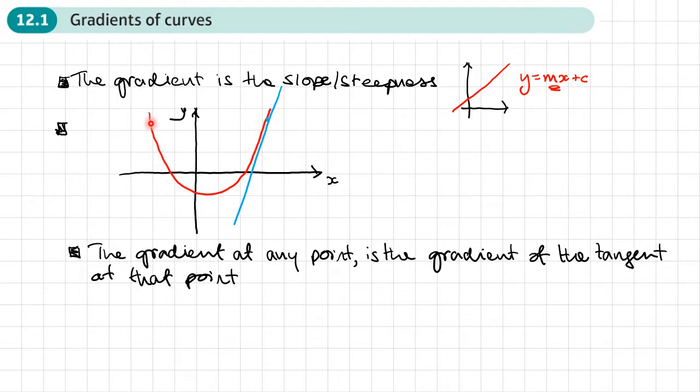By drawing a tangent to a graph, a curve at any point, and by finding the gradient of that tangent, we find the gradient of any curve at that particular point. Unlike a straight line where the gradient was always the same, with a curve here the gradient changes.